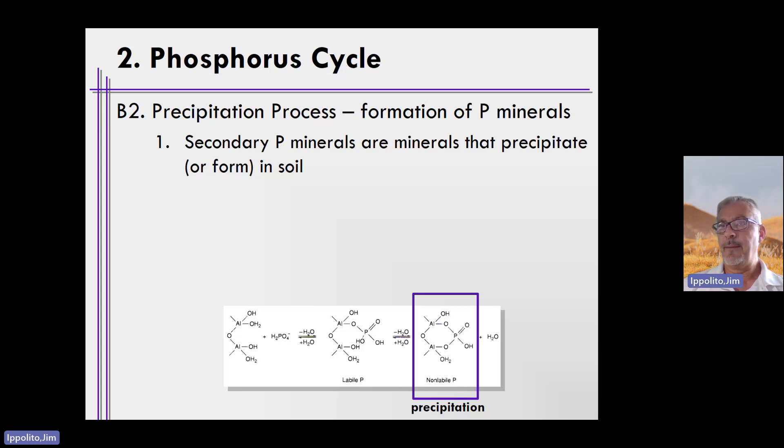These minerals that precipitate are called secondary phosphorus minerals, and these minerals form in soils. The natural weathering scheme is to have primary minerals, which are always apatites—calcium phosphate mineral phases that weather naturally over time and release calcium and phosphorus into the environment.